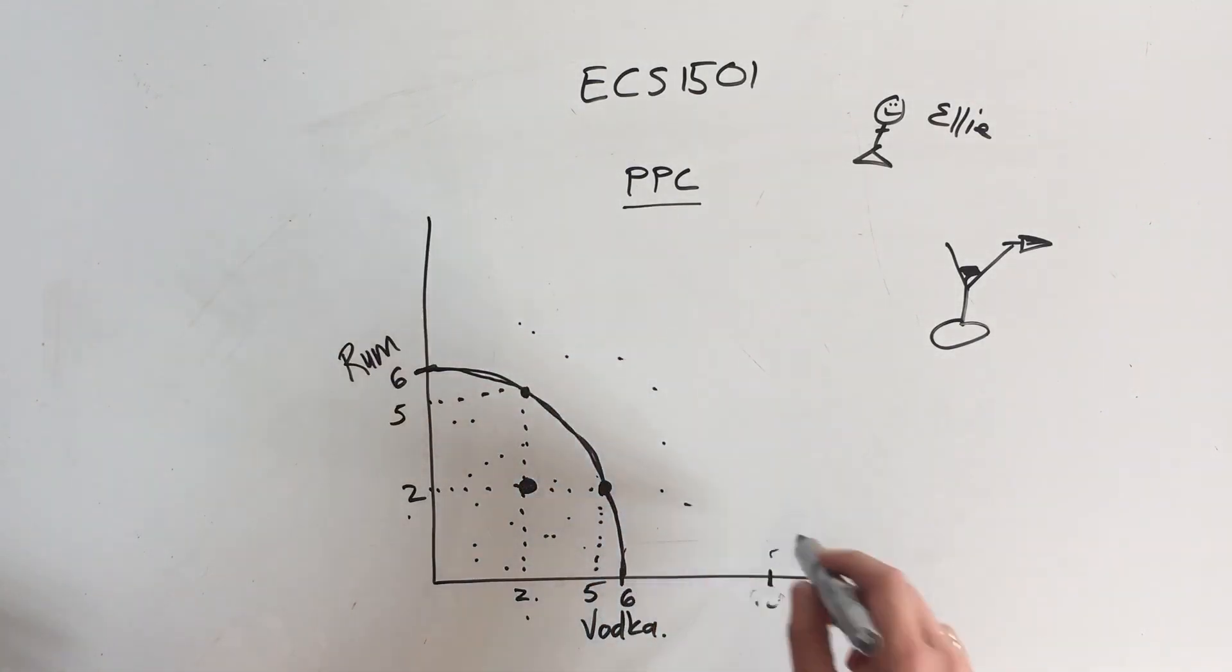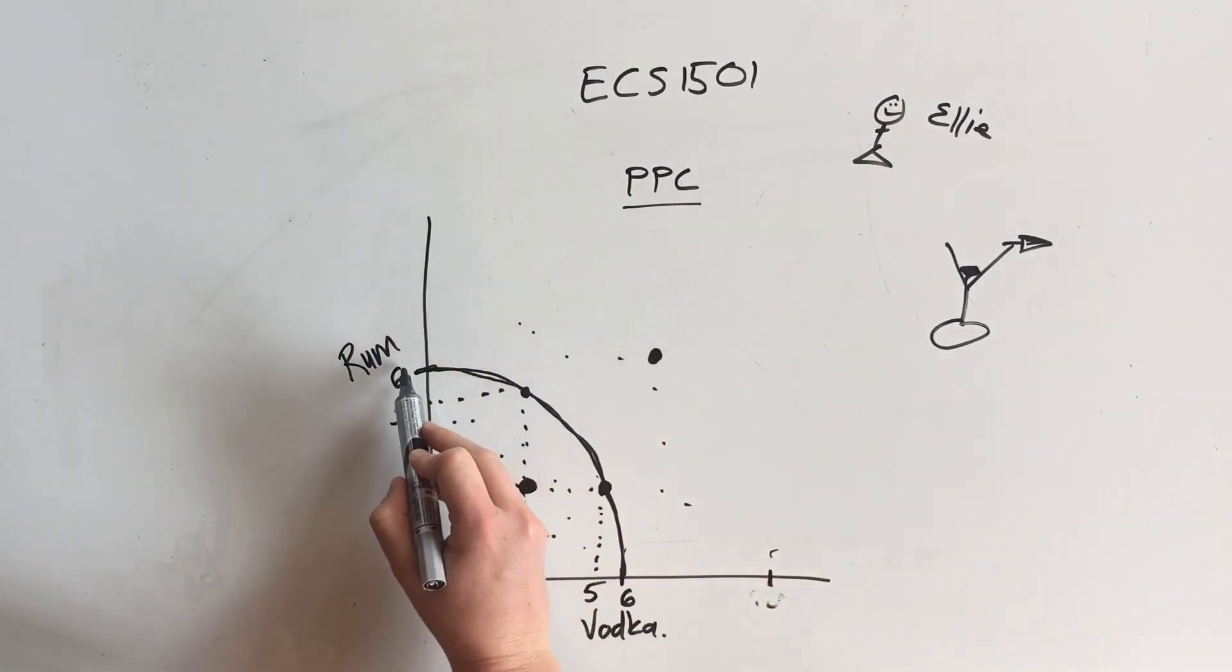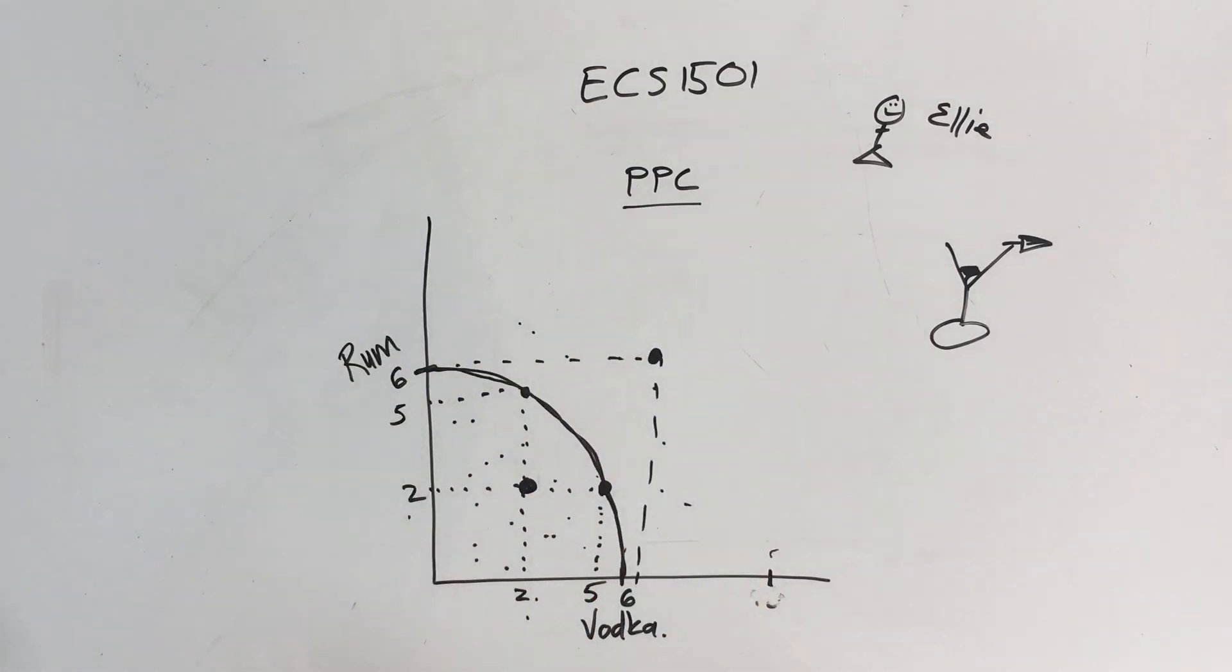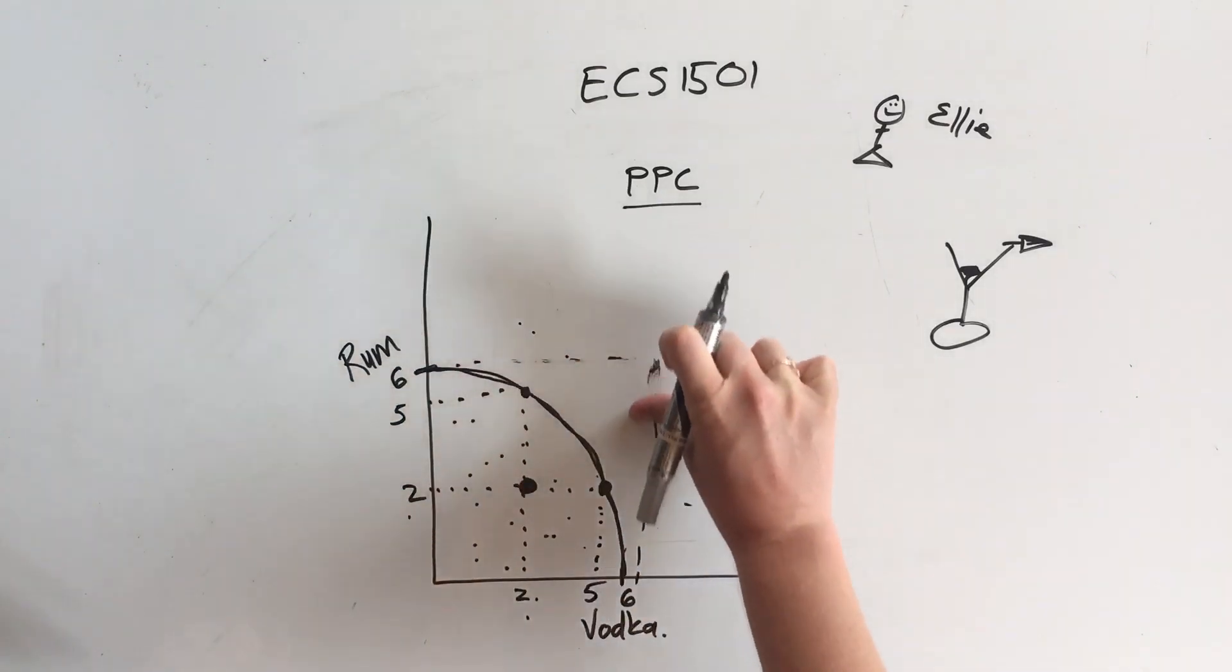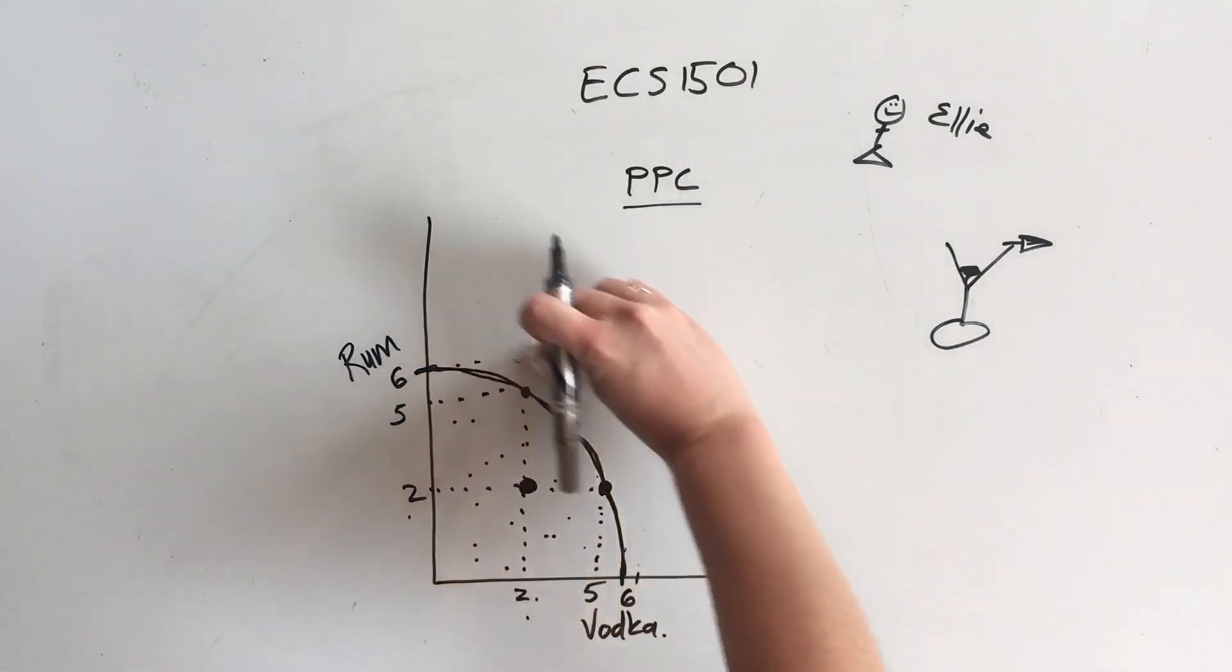Outside the curve it's all impossible. We can't afford it. So if we had to go over there and try and buy six bottles of rum and six bottles of vodka, we can't do that, we can't afford that. That is not an option for us, so everywhere on this side of the curve it's impossible, it's not an option.